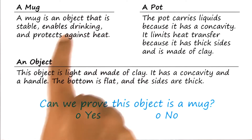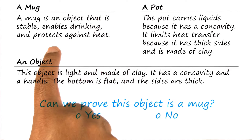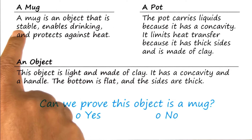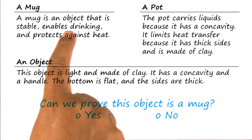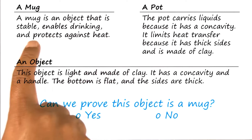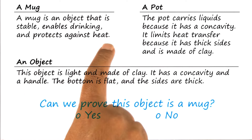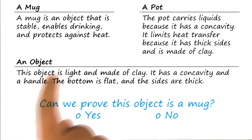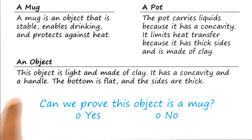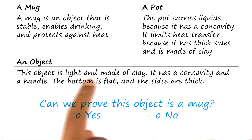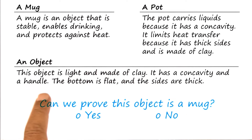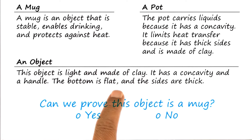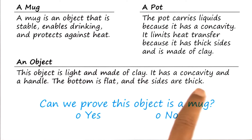Notice that we have added one more element here — not only stable like a cup, not only enables drinking like a cup, but also protects against heat. Here is an object I will label in the kitchen. The object is light and is made of clay. It has concavity and has a handle. The bottom is flat and the sides are thick.